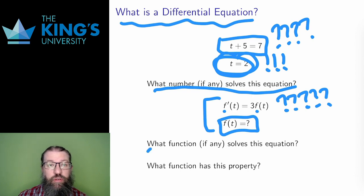Here, the variable is written f, and written f of t to make it clear that it is a function of the independent variable t. A differential equation always includes a function and one or more of its derivatives, hence the name. It asks for a property of the function. In this case, what function has a derivative which is three times the original function?